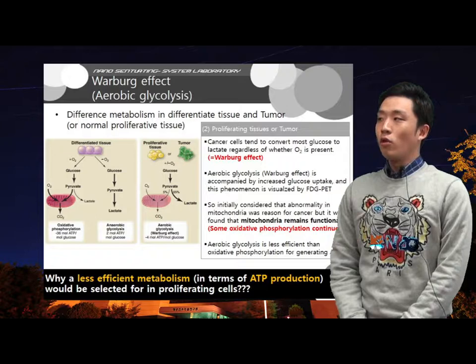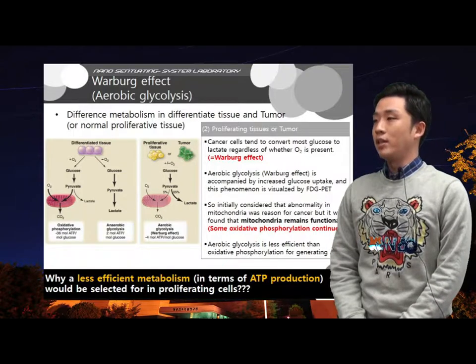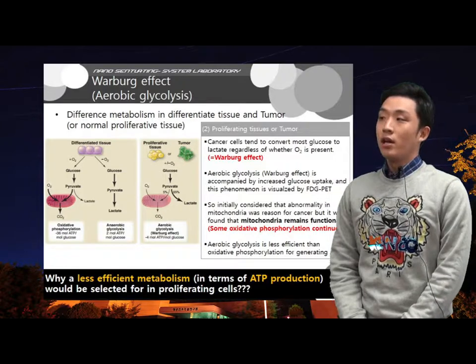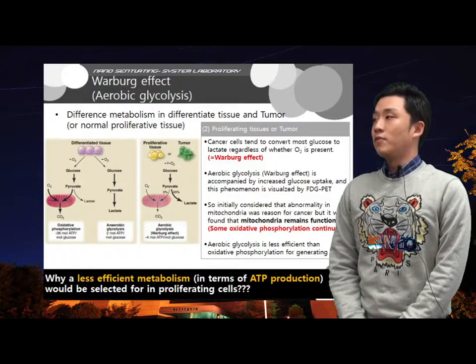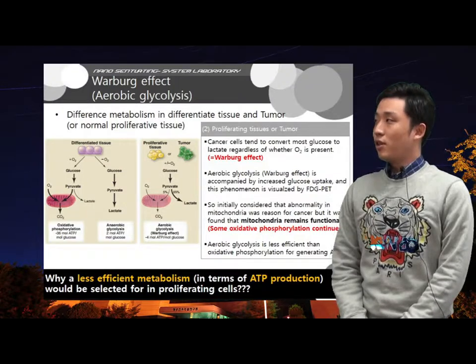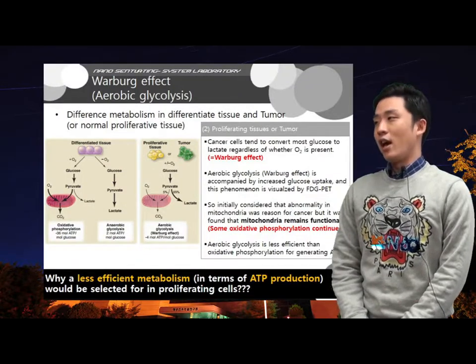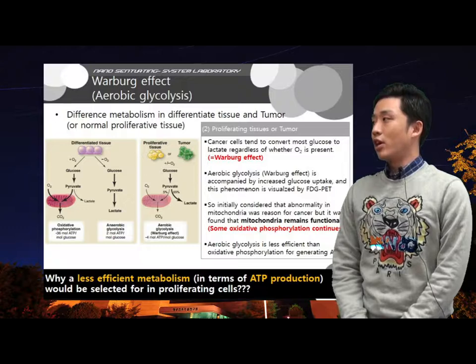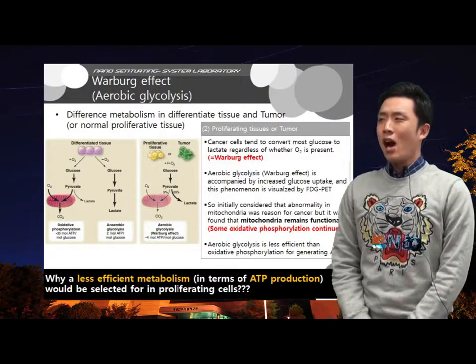In this process, only about 10% of ATP is generated compared to oxidative phosphorylation. So initially, it was considered that an abnormality in mitochondria was the reason for cancer.